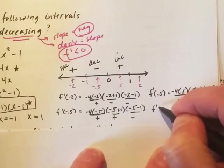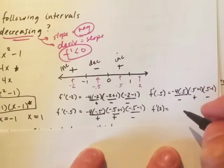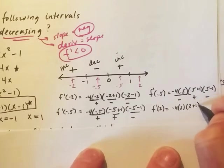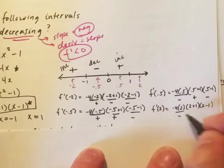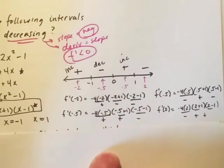And then lastly, we're going to repeat these steps for f'(2). So actually finding the derivative at 2. So we've got negative 4 times 2, 2 plus 1, 2 minus 1. Well, negative 4 times 2 is negative. These two things are positive. So that entire interval is going to be negative.